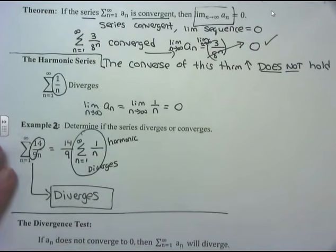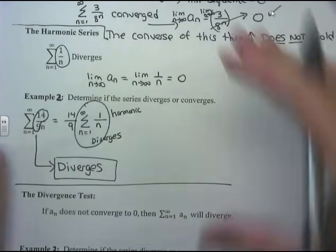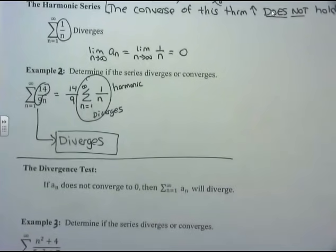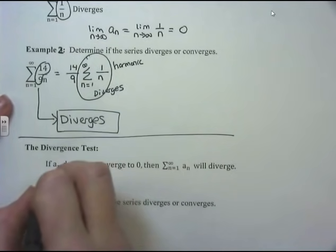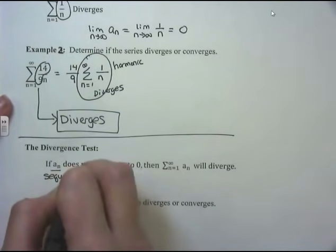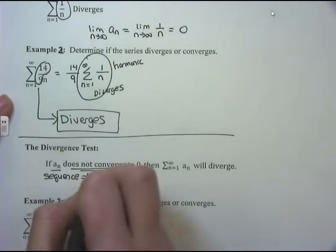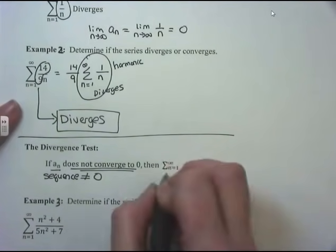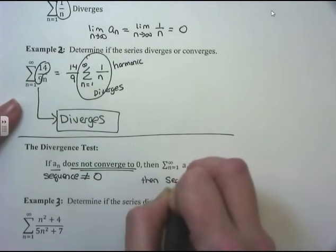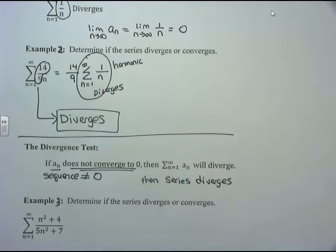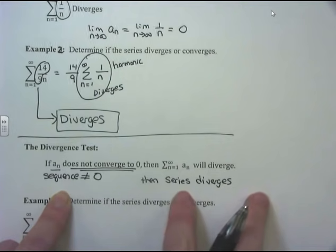A major test to talk about in this section is the divergence test. If you have a sequence and you can show that the sequence does not converge to 0, then you get to say that the series diverges. It follows from the theorem above and is a really quick, easy way to work with the sequence but get to say something about the series.